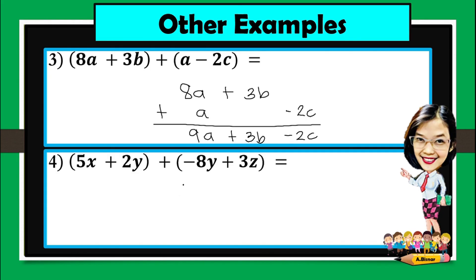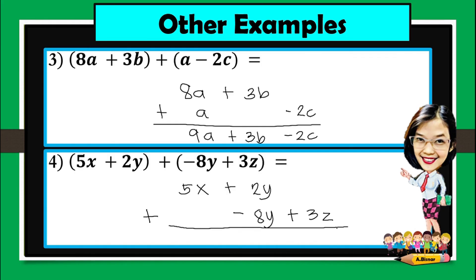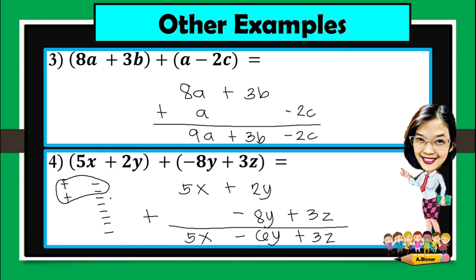Let's try number 4. 5x plus 2y, then we will add this to negative 8y plus 3z. Again, just combine terms that are similar. So we have 5x. Then 2y plus negative 8y gives negative 6y. And we bring down 3z. So the final answer is 5x minus 6y plus 3z.